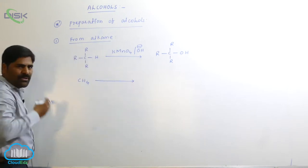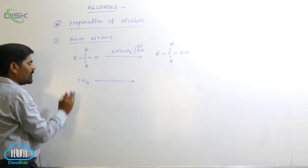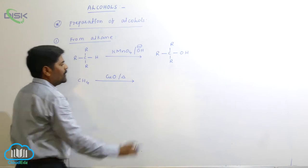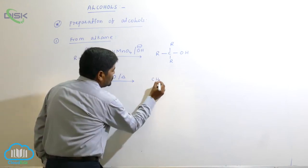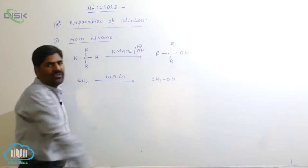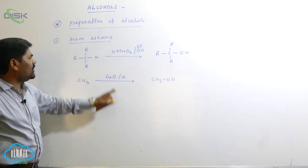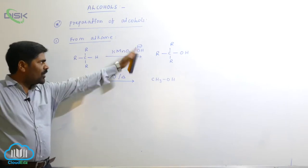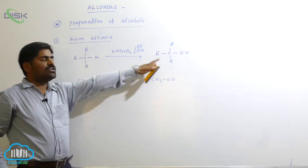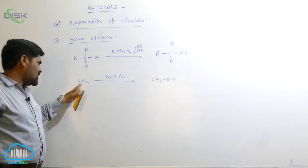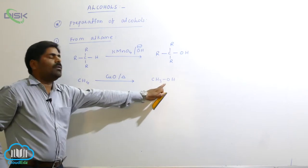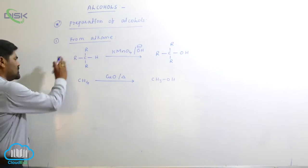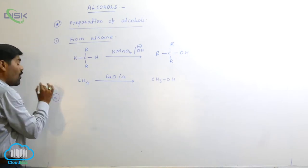The second case is methane. This is the commercial method of preparation of methanol from methane: when methane reacts with copper oxide at high temperature it exclusively gives methyl alcohol. So using a strong oxidizing agent like KMnO4 in basic medium, an alkane converts into a tertiary alcohol; using methane we can prepare methanol.